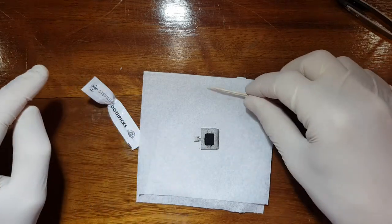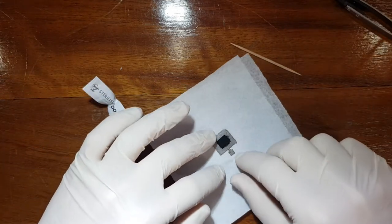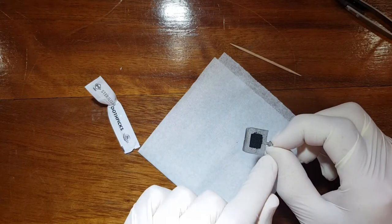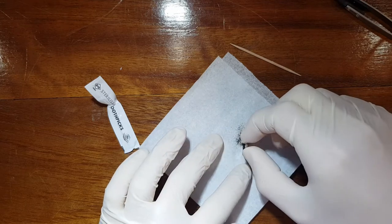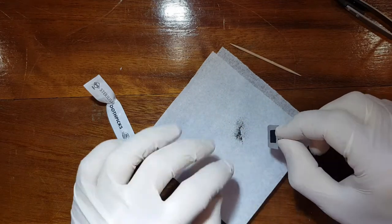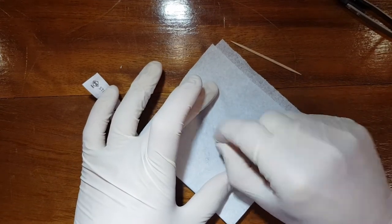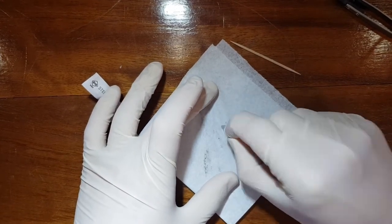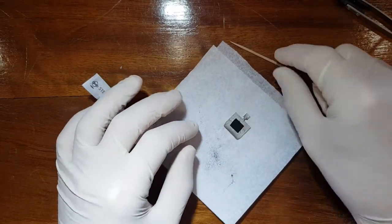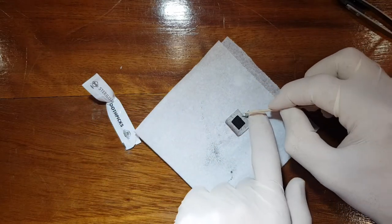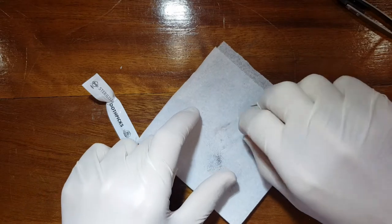So now you will see that the sample is obviously all over the place there and it looks quite messy. Now what you can do, you can pick up the sample by the little tab there, and you can actually tip the sample and tap it against the bench to get off with the excess material.